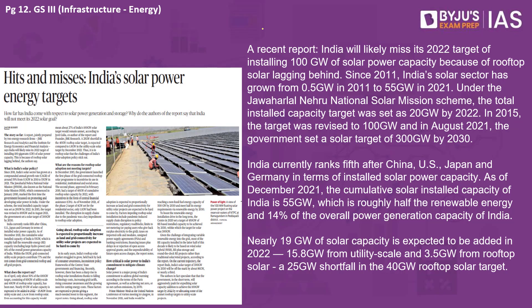The next article focuses on India's solar power and the fact that India might not achieve the solar energy targets it set for itself. This article is based on a report jointly prepared by JMK Research and Analytics and the Institute for Energy Economics and Financial Analysis. According to the report, India will miss the 100 gigawatt solar energy target set for 2022. The earlier target under the Jawaharlal Nehru National Solar Mission was just 20 gigawatts, but in 2015 the government revised it to 100 GW by 2022 and 300 GW by 2030.